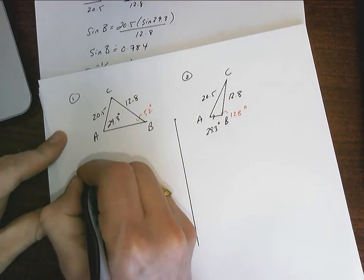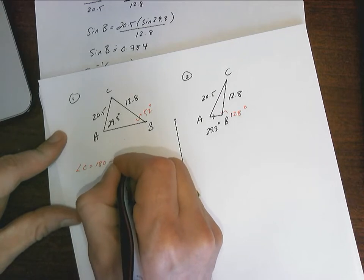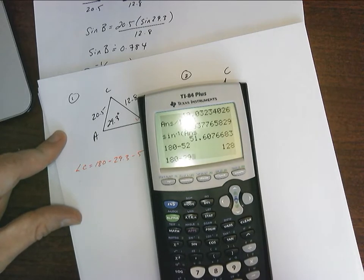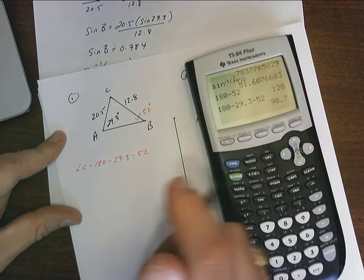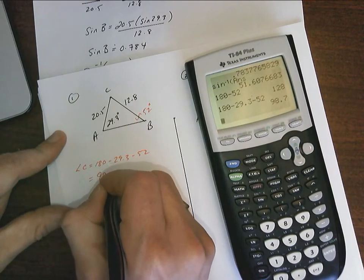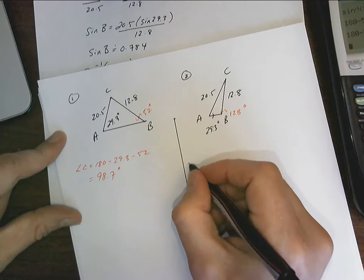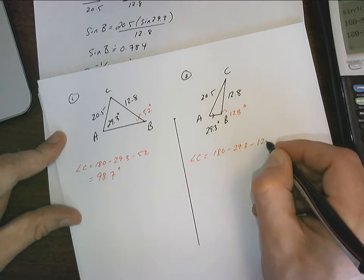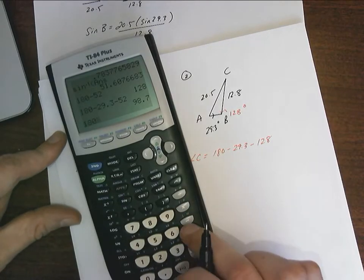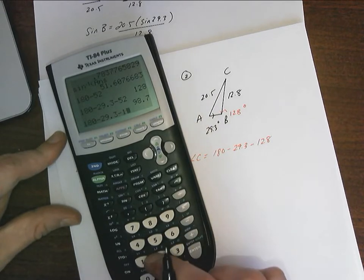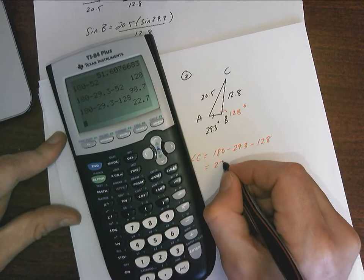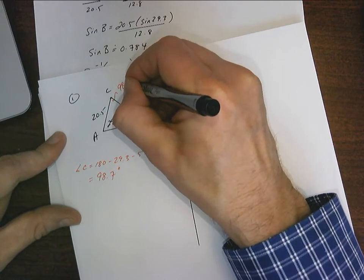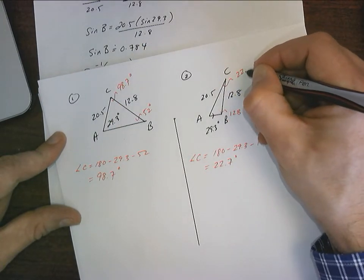In this triangle, angle C will equal 180 minus 29.3 minus 52. 180 minus 29.3 minus 52, 98.7 degrees will be angle C over here. Angle C will be 180 minus 29.3 minus 128. So 180 minus 29.3 minus 128 is 22.7 degrees. So in this triangle, that's 98.7 degrees. In this triangle, that's 22.7 degrees.